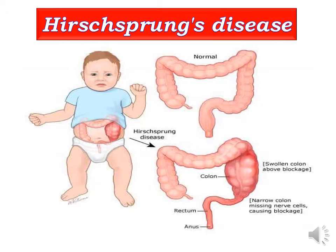The genetic predisposing factor is a family history association with RET proto-oncogenes, which is the most common type of genetic abnormality in Hirschsprung disease.